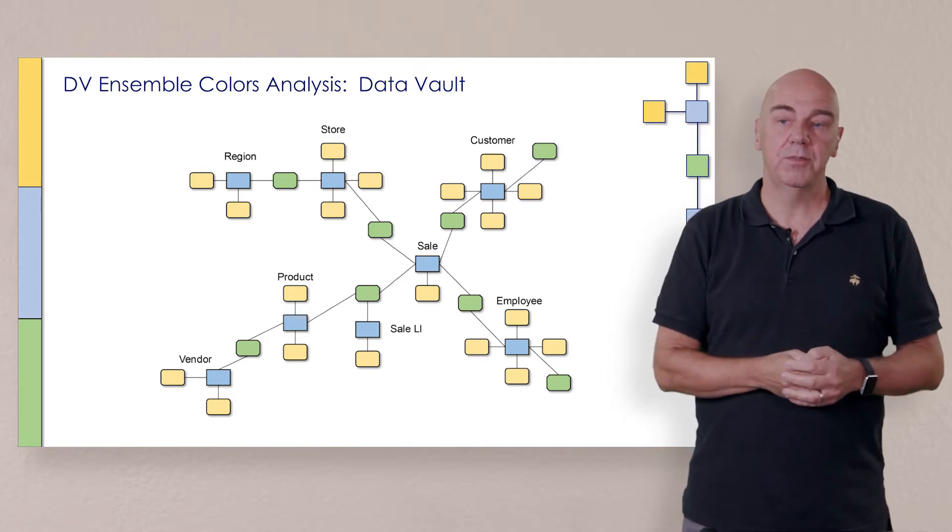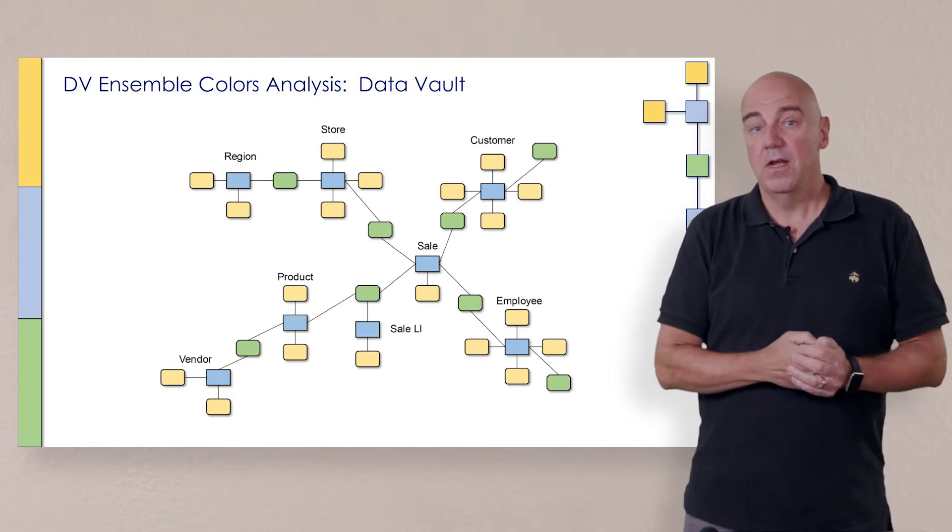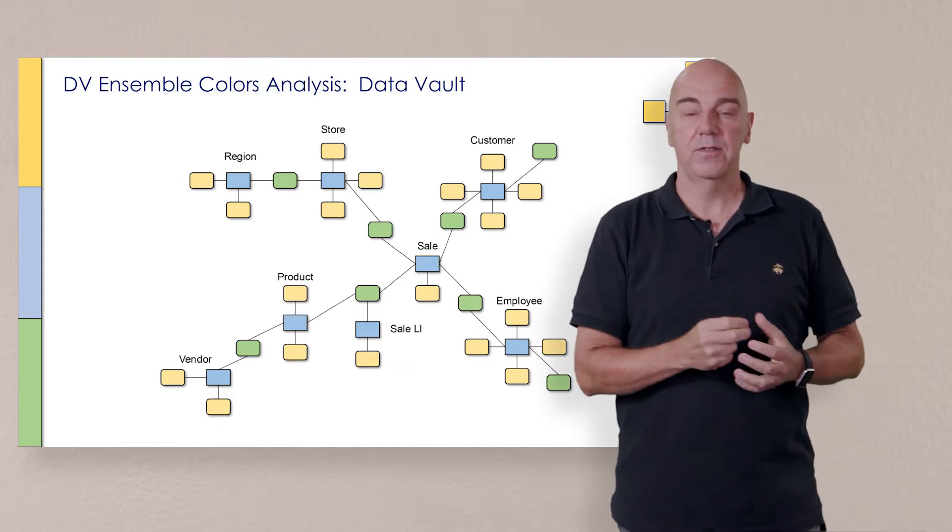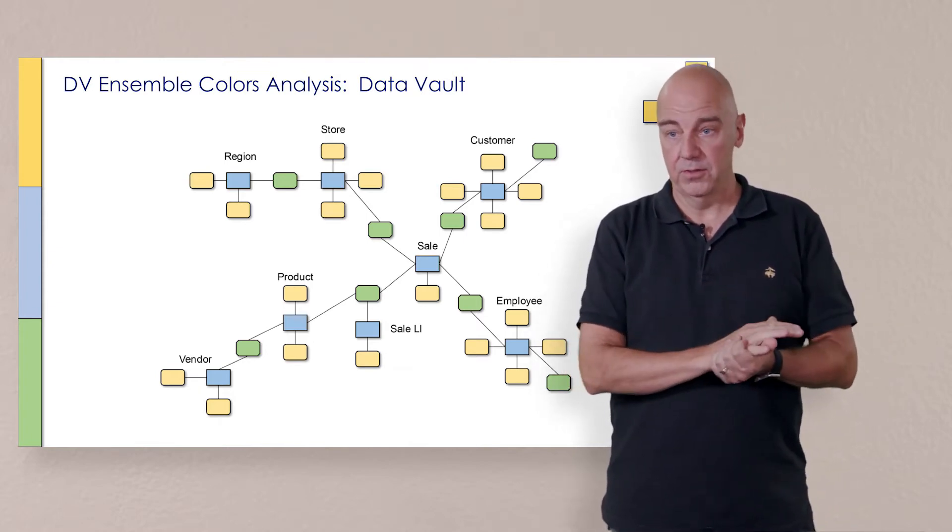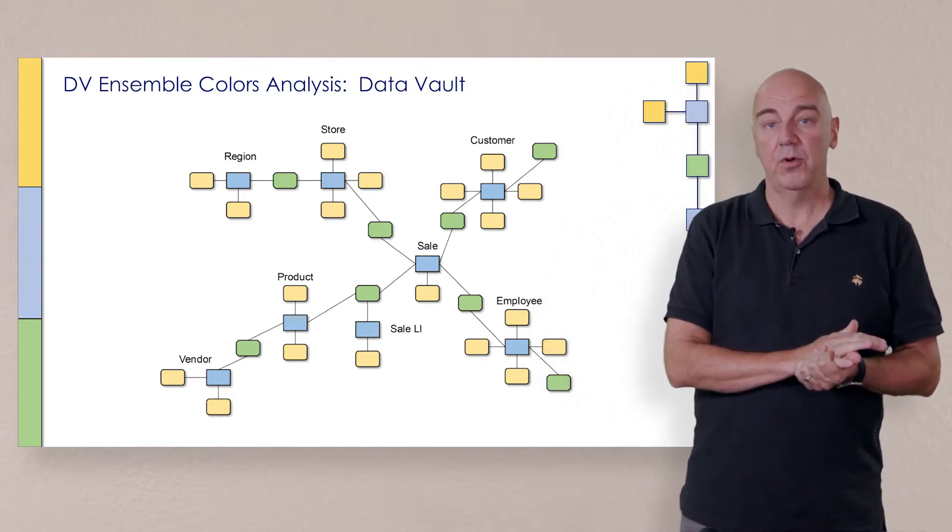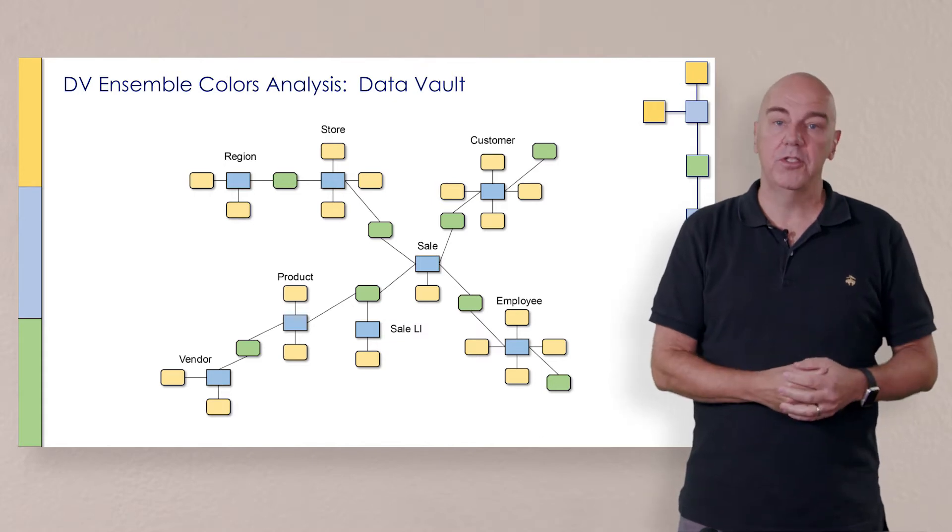The things that are green are only green. They're only relationships. And of course, the blue parts, the hubs only represents the instance or the key, but nothing else. So this is really how things have been spread apart. And that's the secret for the agility we have.